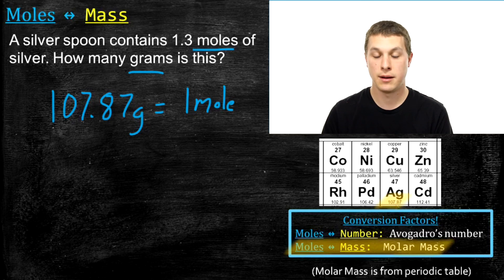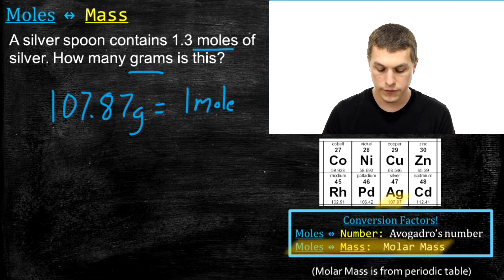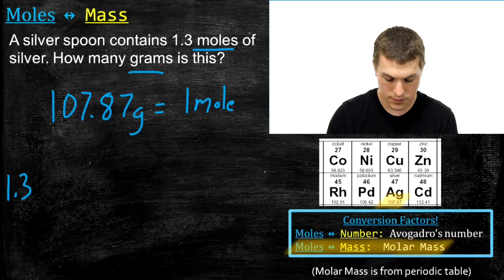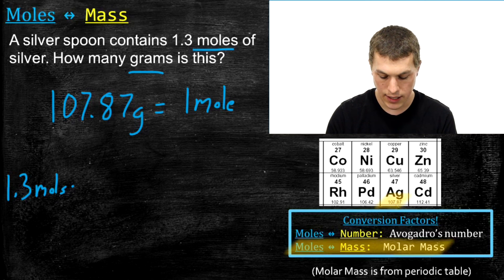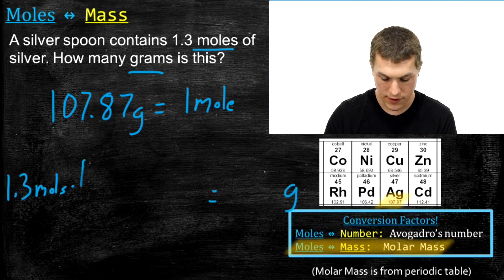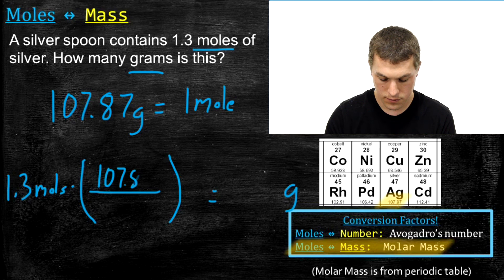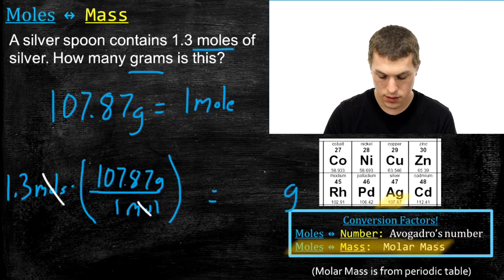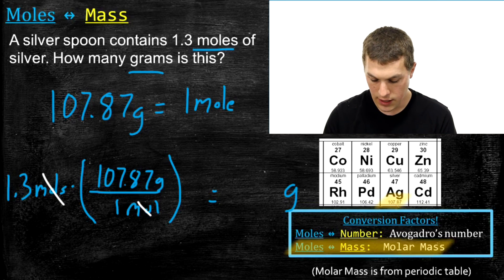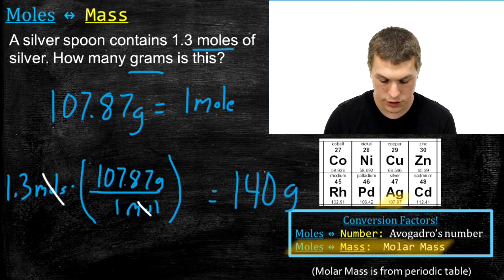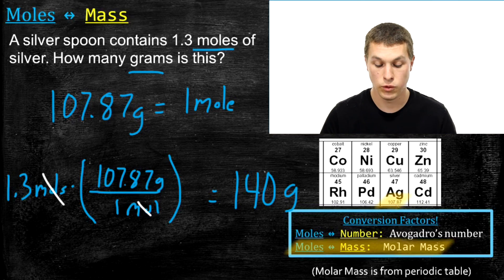Now I'm going from moles to grams, so I write down 1.3 moles on the left-hand side. In my conversion factor, grams are on top so I'm left with that, and moles are on the bottom so I divide by moles. I multiply by 107.87 and if I do that in my calculator, I get 140 grams. So your silver spoon weighs 140 grams and contains 1.3 moles.